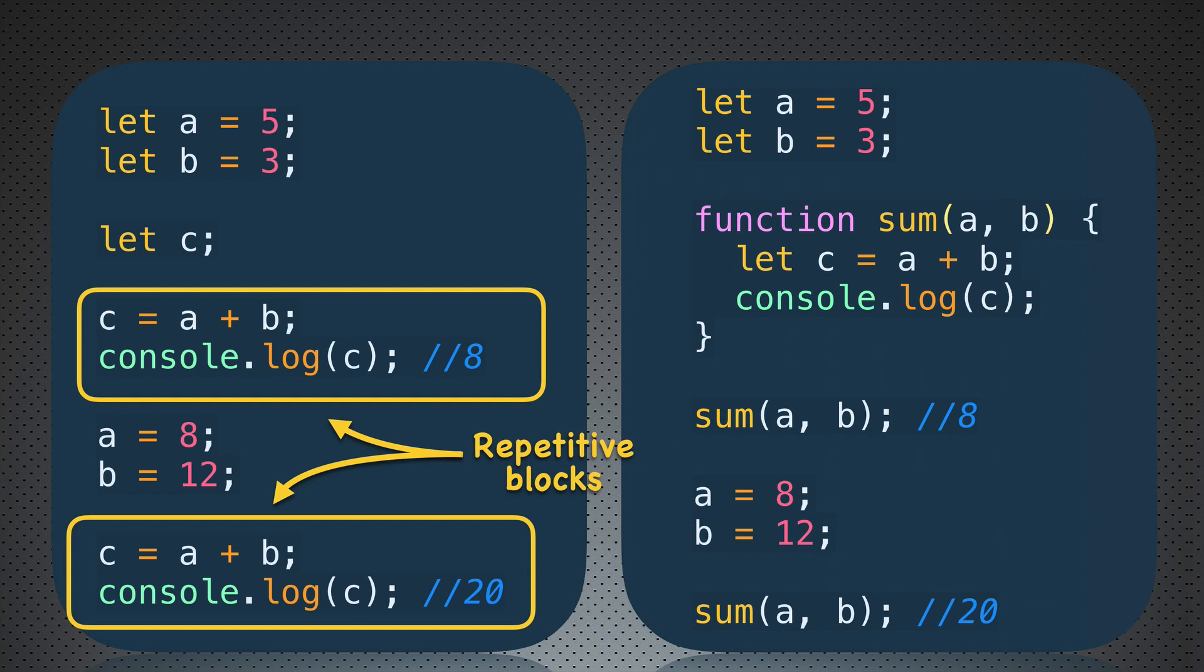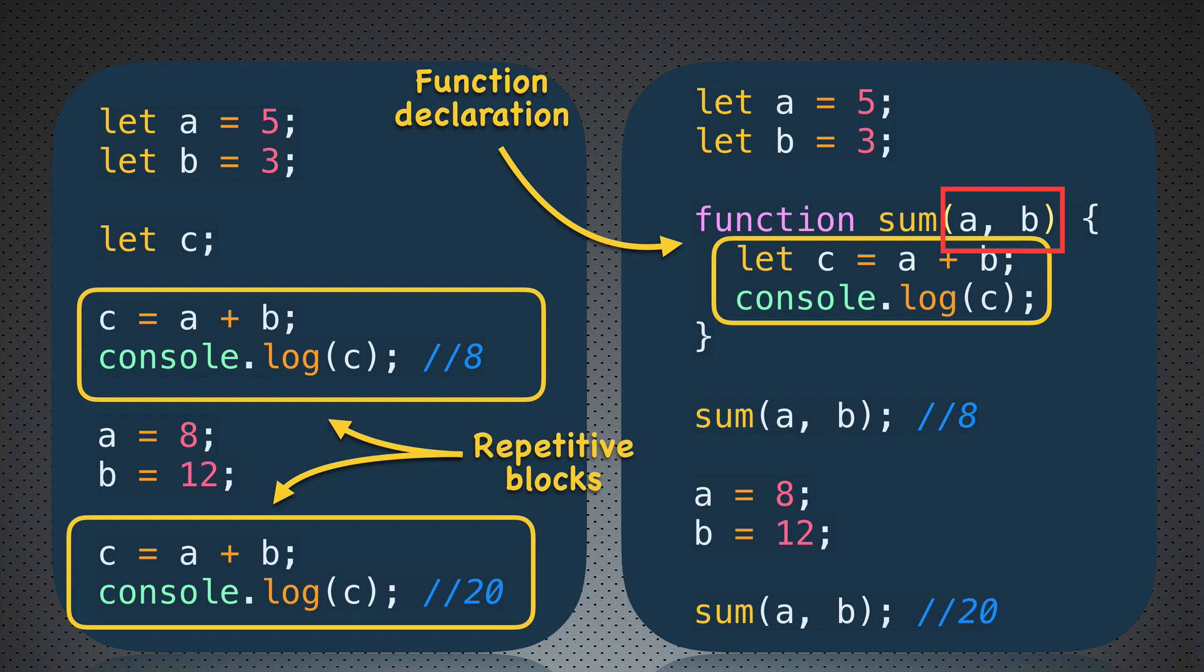Now you see here a function called sum. In this example it is called a function declaration. We have declared a function called sum. You see that inside of this function there is a block of statements, and there are two of them. They are identical to the repetitive blocks that you see on the left side: let c equal a plus b, and console log c. This function also has parameters a and b, and those parameters are input values for the function. Those input values can be changed when you call the function.